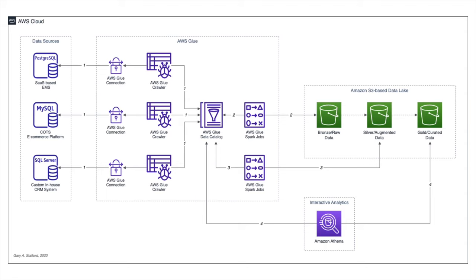On the screen you see a diagram representing the architecture for our demonstration. The data will be organized based on a pattern of bronze, silver, and gold data. In step one, we will catalog the data in our three data sources — Microsoft SQL Server, MySQL, and PostgreSQL databases, all running on Amazon RDS — into an AWS Glue Data Catalog. The AWS Glue Data Catalog is a Hive-compatible Metastore which stores the metadata, schema, and partition information about the data in our data sources and in our data lake.